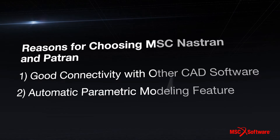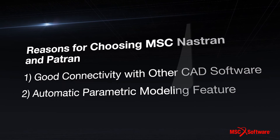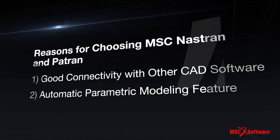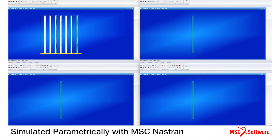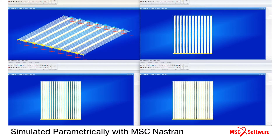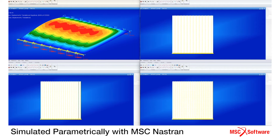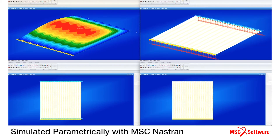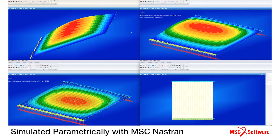The second reason we chose Nastran and Patran is its automatic parametric modeling feature. Once we program the parameters we want, the computer can run by itself 24 hours and generate thousands of different shapes and configurations for aerospace parts. We find the best one among these — this is called optimization design — and send all models to Nastran for calculation to determine which shape is better.